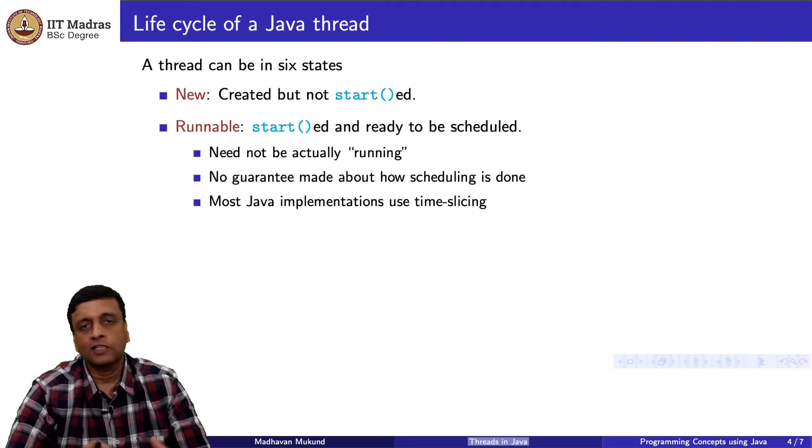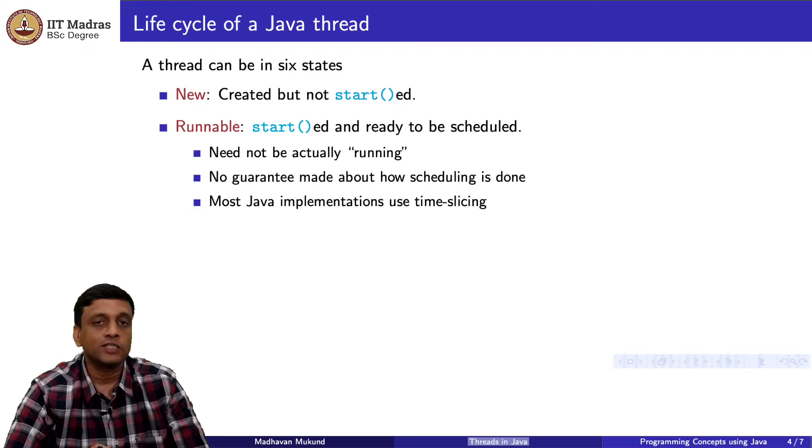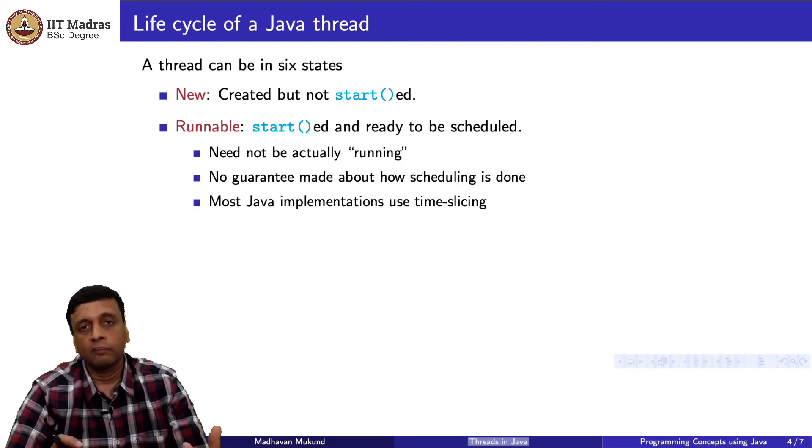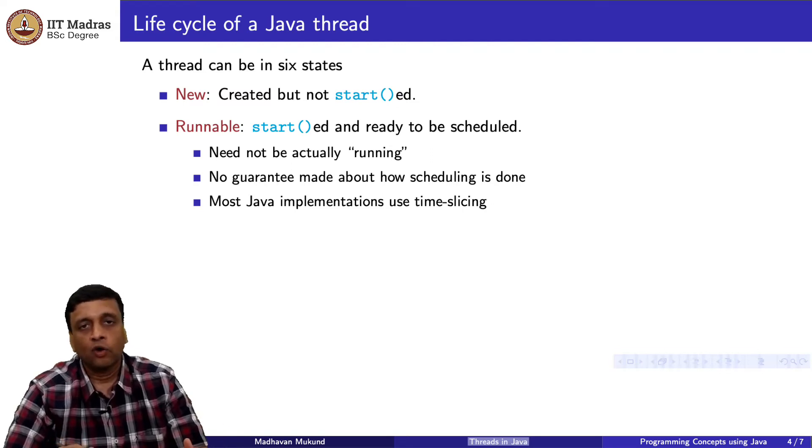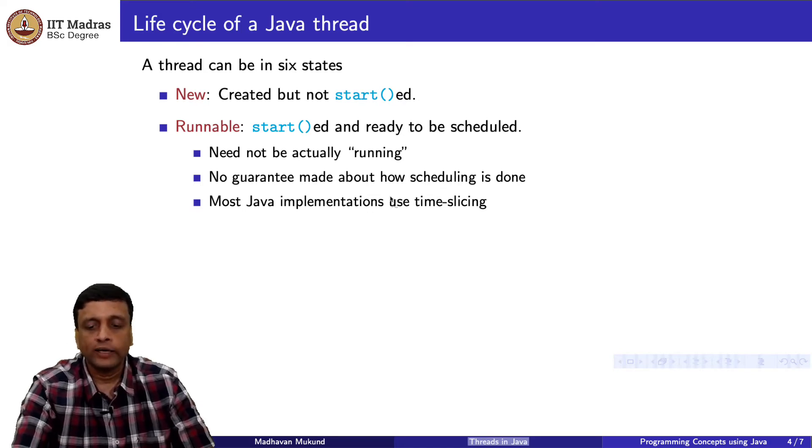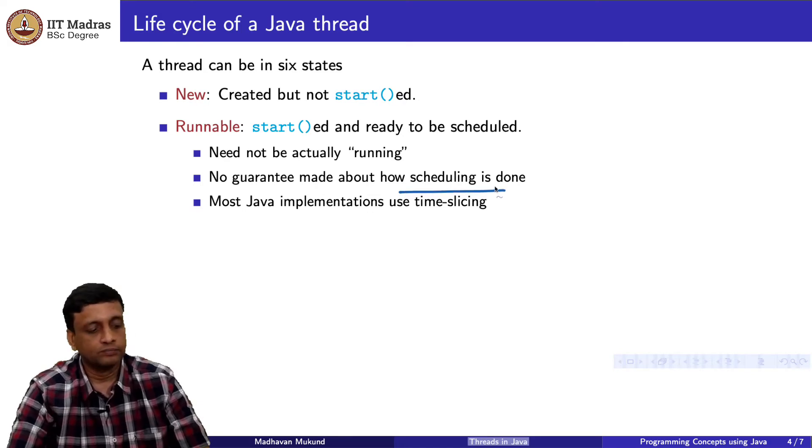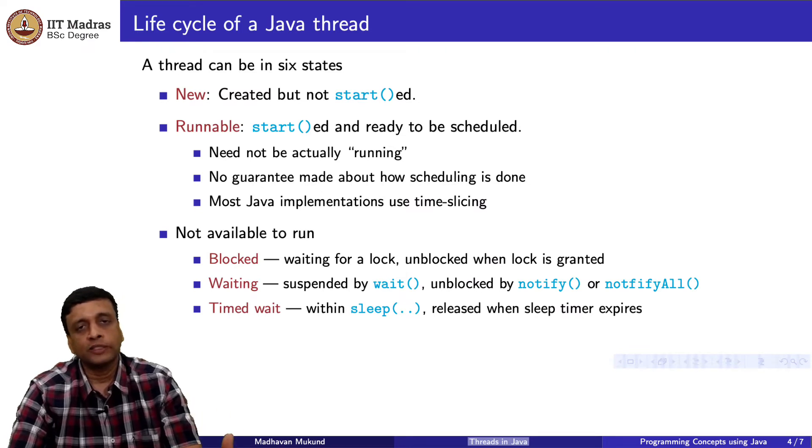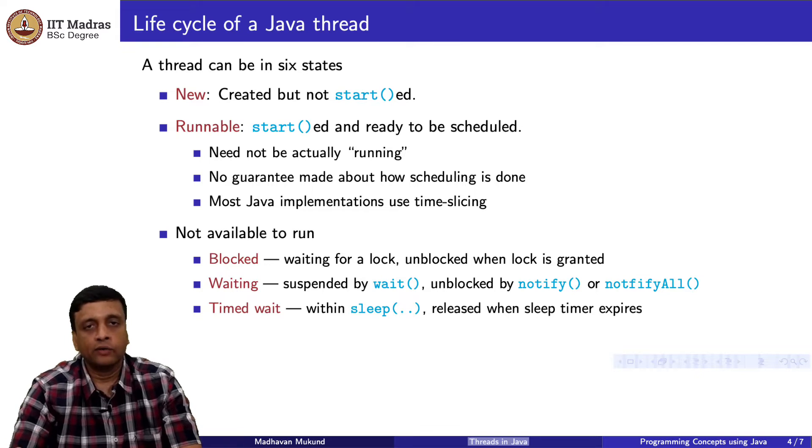But this is typically the case for desktops and big computers. But this may not be the case, for instance, if you are running Java on a phone. Java on a phone might actually execute a thread until it finishes before it executes another thread. It really does depend on which Java implementation, which platform you are running it on. There is no guarantee about how scheduling is done. Runnable is the situation where modulo the scheduler allowing it to run, the thread can run.